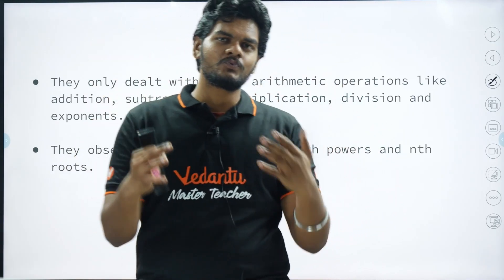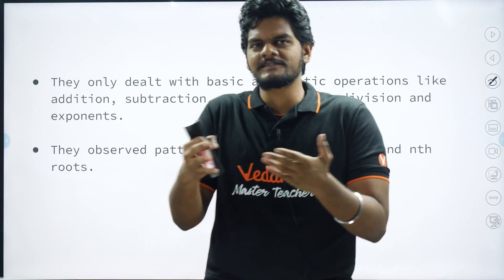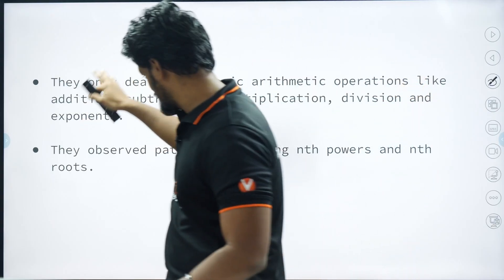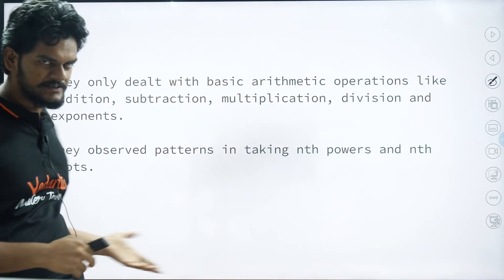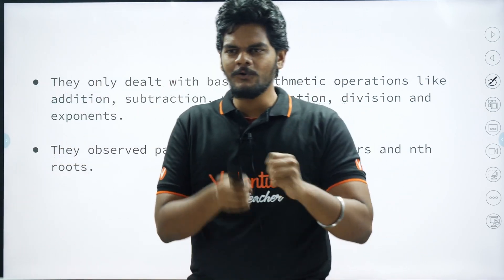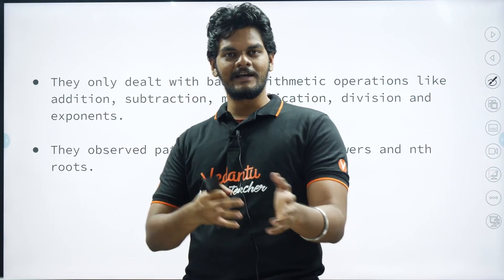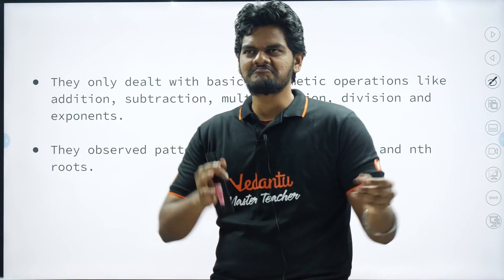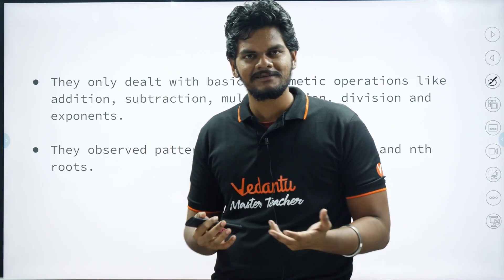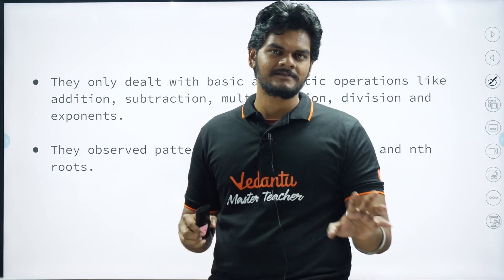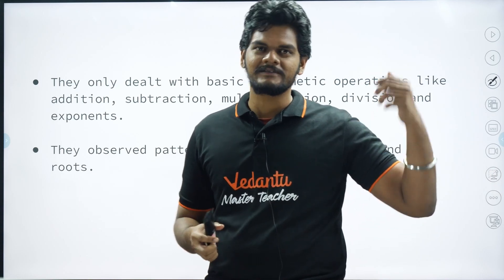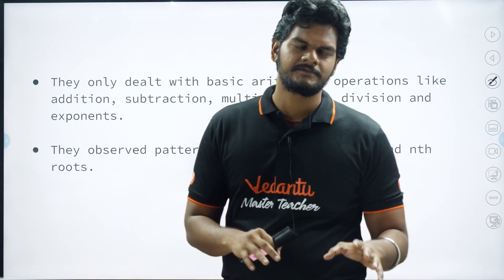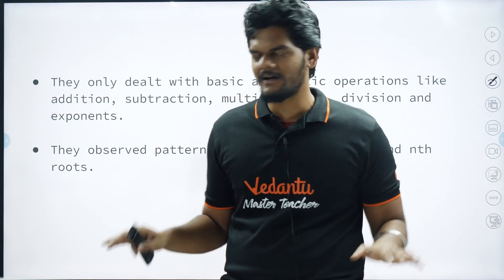And what did they do with those numbers? With the system, they developed certain theories. The number theory we know now was not exactly there, but they had basic arithmetic operations like addition, subtraction, multiplication, division, and exponents. They observed patterns — they saw what happens when you power something, when you multiply by 11, when you take roots. Those are kind of marvelous observations. If you have heard of Vedic mathematics, it is not exactly from the Vedas, but it is all based on primitive understanding of numbers and those basic observed patterns.